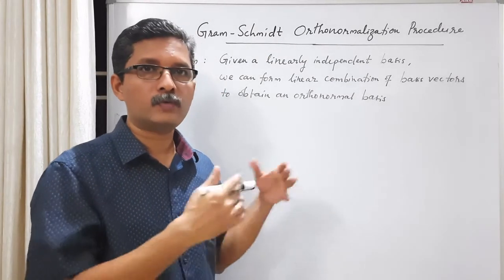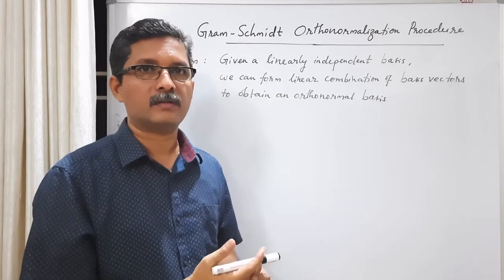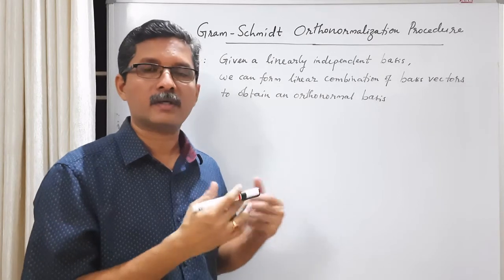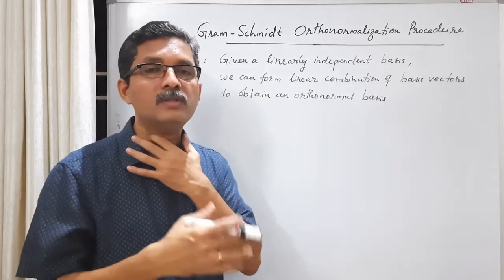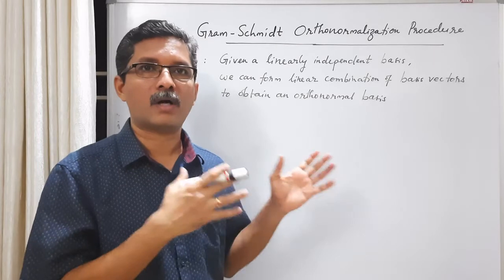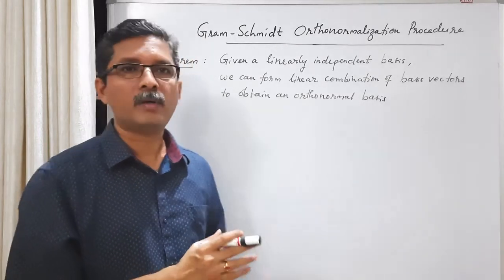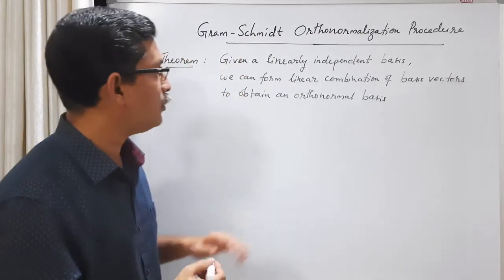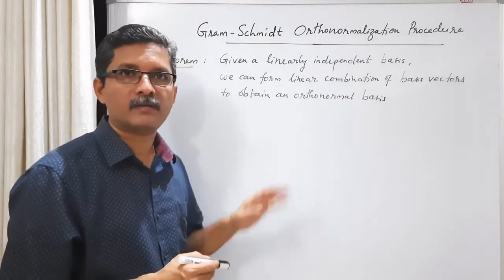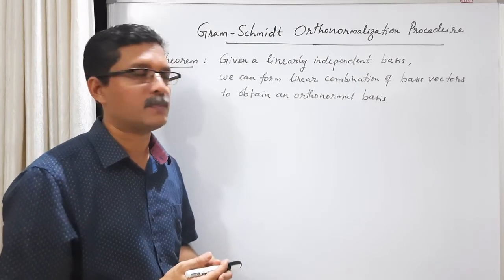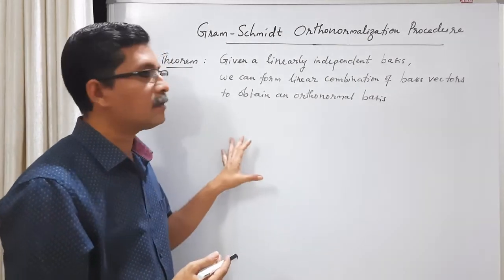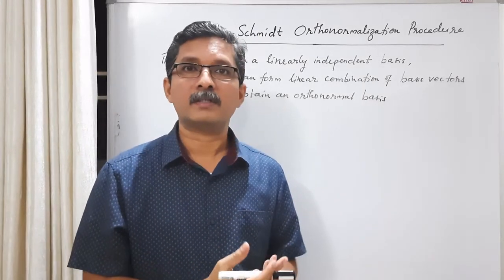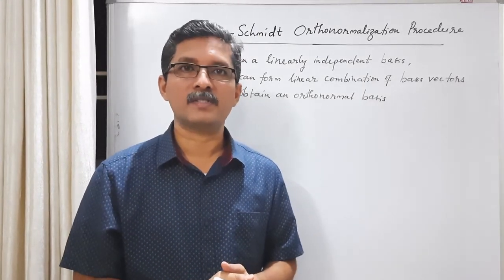We are not going to prove this theorem formally, but what we are going to do is show how this theorem can be used to construct an orthonormal basis from a linearly independent basis. Before dealing with abstract vectors in an n-dimensional complex vector space, let us first consider our familiar spatial vectors in the three-dimensional physical space.